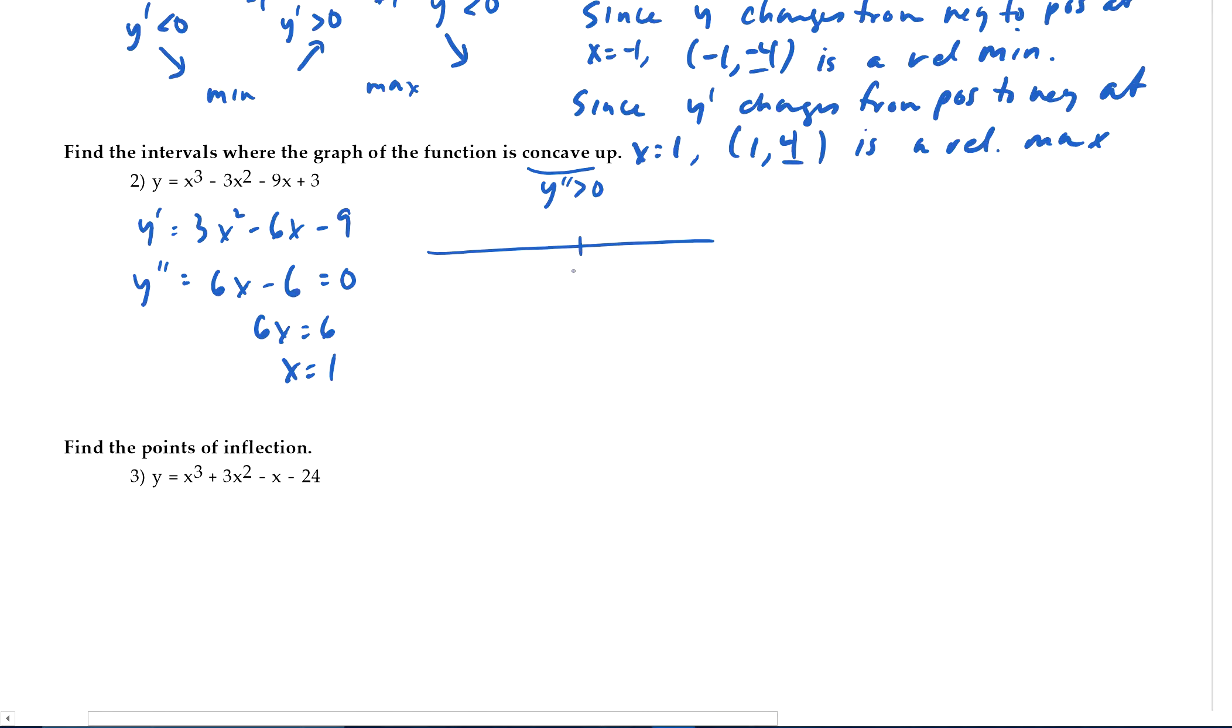So that happens when 6x equals 6 or x equals 1. So I know that at 1, that's when y double prime is 0. That's actually a candidate for an inflection point. Because an inflection point, which you'll see down here, is when it changes sign. But to the left of 0, what do we know about y double prime? Well, if it's negative 1, negative 6 minus 6 is negative. So it's concave down. Positive, bigger than 0, greater than 0, it's concave up. So it's concave up.